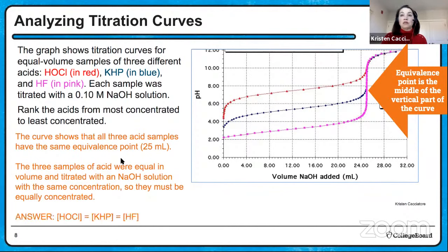Part DIII: write the net ionic equation for the reaction if a few drops of 12 molar HCl are added to this buffer. HCl is a strong acid — you have to know the strong acids. A strong acid reacts with the base component of any buffer. So the acid neutralizes the base component HCOO-minus, producing water and the acid component HCOOH. You can write this in Bronsted-Lowry or Arrhenius style.